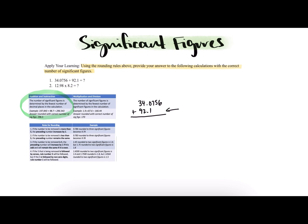Since 92.1 has the least number of decimal places, we will cut off our answer according to the last decimal place of the number with fewer decimal places. So we'll stop where 92.1 stops. Adding normally, we get 126.1756. Since we have to cut off at the tenths place, we round the 7 up. Since 7 is greater than 5, the preceding number increases by one, giving us 126.2 as the answer to part one.